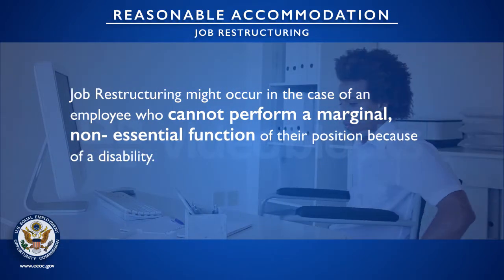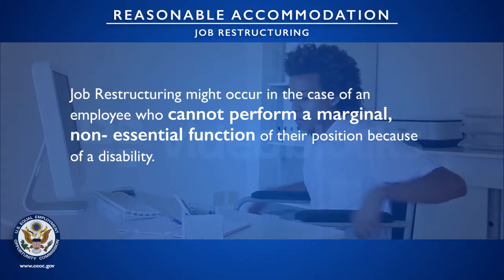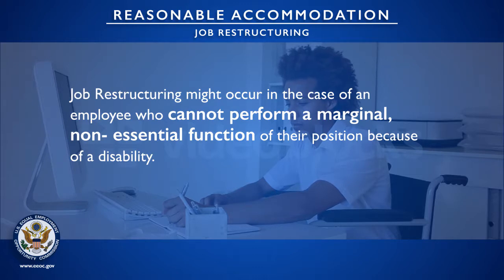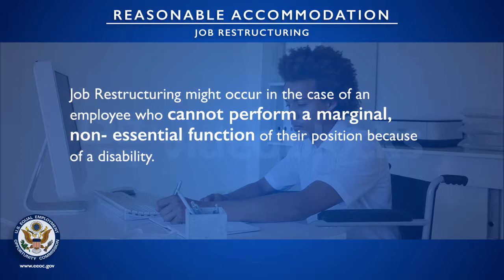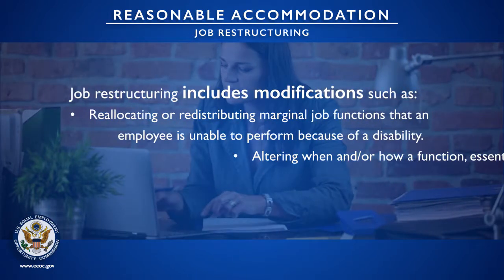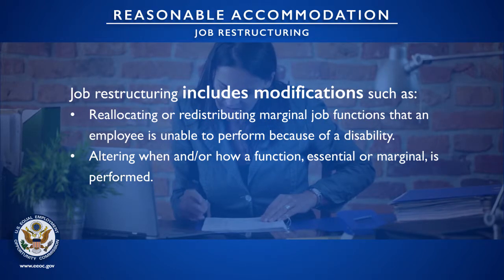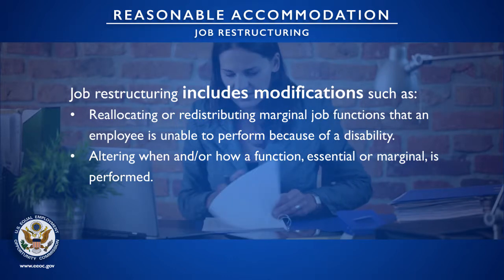Now we will detail two of the most common and major forms of accommodation. The first is job restructuring. This might occur in the case of an employee who cannot perform a marginal, non-essential function of their position. If a particular marginal function cannot be done because of a disability, that function can be reassigned to another employee in exchange for other duties that can be performed. Job restructuring includes modifications such as reallocating or redistributing marginal job functions.